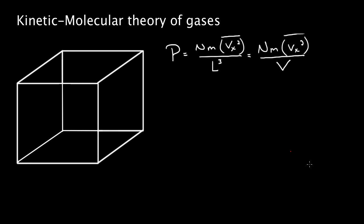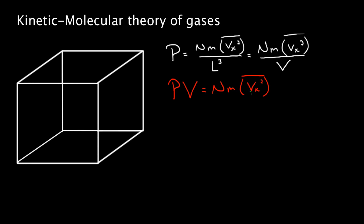Multiplying both sides by V gives: PV = N times m times the average of vx squared. This is great — if we measure the pressure and volume of a gas, we can figure out the average squared x-component of velocity, a microscopic quantity. But we don't want to single out the x direction; it would be better to have a formula in terms of the total average squared velocity.